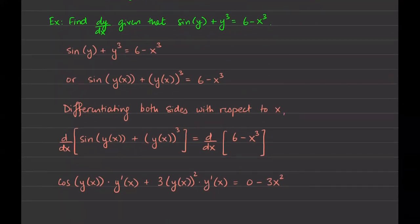Here's the formal way of writing the solution. We have sine of y plus y cubed equals 6 minus x cubed. Another way to understand this as an implicitly defined function is to say we don't know what the relationship between y and x is, but it's some function y of x. So instead of writing just y, we write y of x — it's dependent on x. Similarly, y cubed can be rewritten as y of x, the quantity cubed. In order to find dy/dx, we have to differentiate a function named y with respect to x, so we differentiate both sides with respect to x.